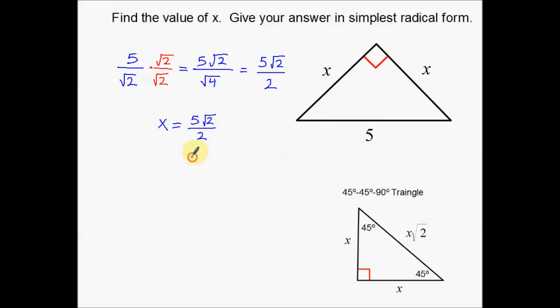You could also write it as 5 halves root 2. I've also seen it written that way. Either way, that is our answer. That is the leg of the right triangle. So there's just a couple of examples to help you with your 45-45-90 special right triangles. And hopefully this video was helpful for you today. Thank you for watching, and we'll see you next time.